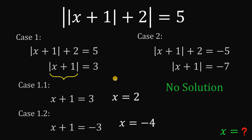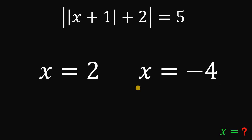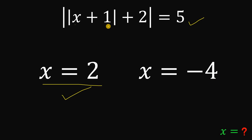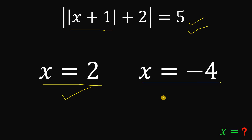So we found two possible values of x. Let's verify. If x equals 2: 2 plus 1 is 3, then 3 plus 2 is 5, and the absolute value of 5 is 5. So x equals 2 is correct. Now, if x equals negative 4: negative 4 plus 1 is negative 3, the absolute value of negative 3 is positive 3, positive 3 plus 2 is positive 5, and the absolute value of positive 5 is positive 5. So x equals negative 4 is also a solution.